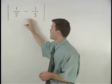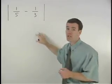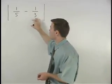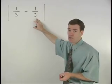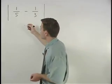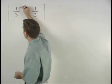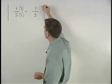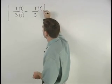To subtract these two fractions, we need a common denominator. And the common denominator for five and three is 15. So we multiply top and bottom of this first fraction by three and top and bottom of the second fraction by five.